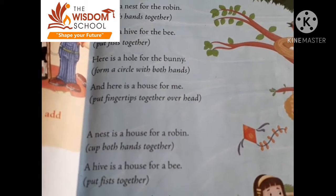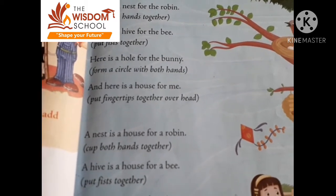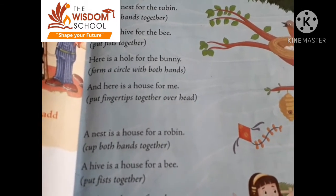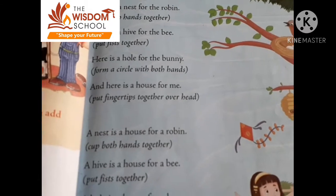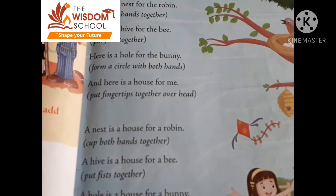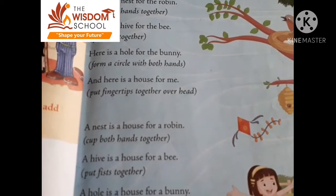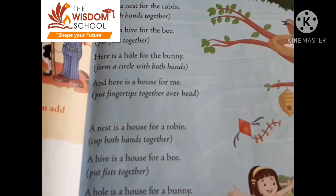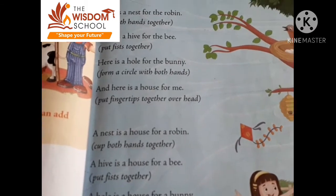Here is a hall for the bunny. Bunny ka home kunsa hai? Hall. Form a circle with both hands. Aapne douno hands se kya banana hai? Circle.